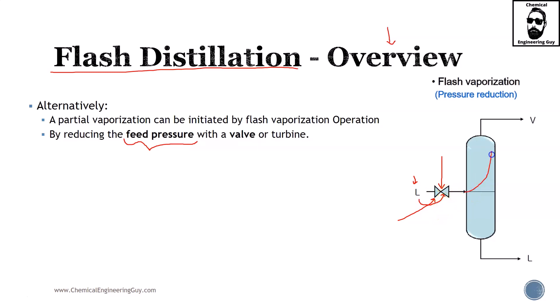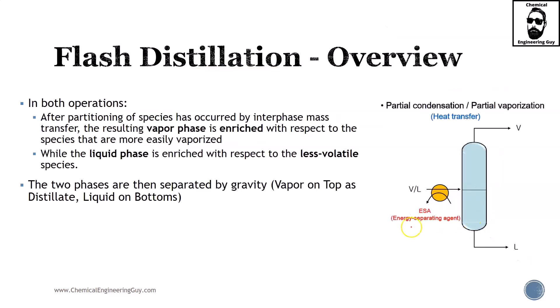What you want to do of course is vapors go upwards, liquids fall down. In both operations, after partitioning of species has occurred by interface mass transfer, the resulting vapor phase is enriched—enriched meaning that the most volatile material will be of greater amount here—while the liquid phase is enriched with respect to the less volatile material, or I like to call it least volatile component. The two phases are then separated by gravity. So as you can imagine, vapor goes upwards and liquid goes downwards.